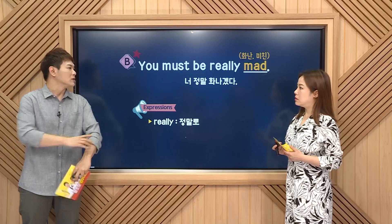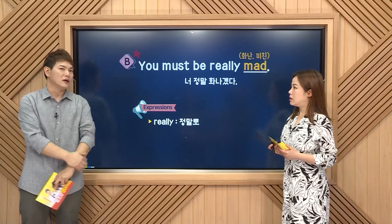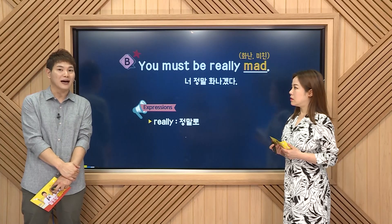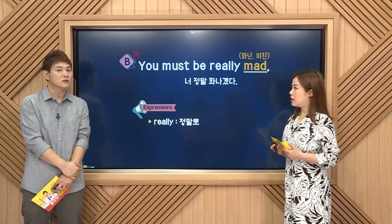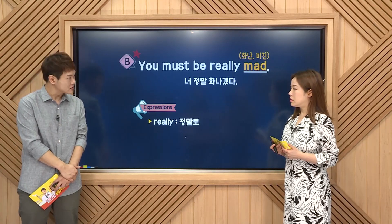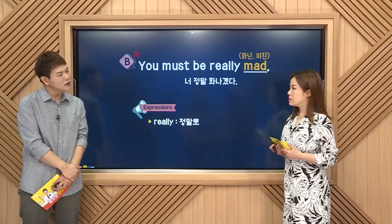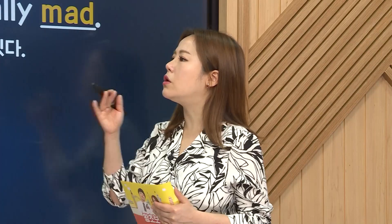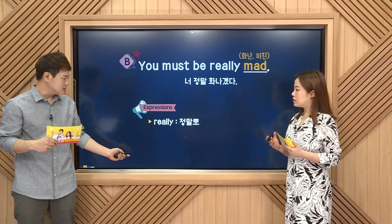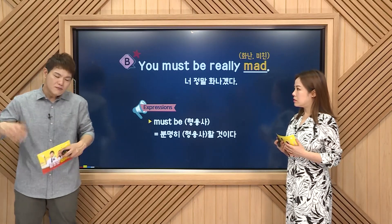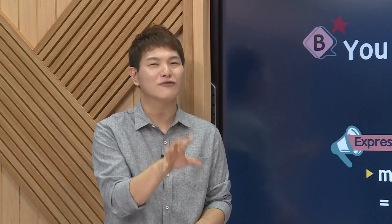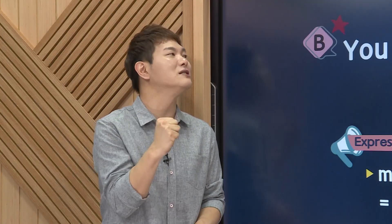여기 지금 너무 감동했던 게, must be라고 할 때, 원래 우리가 must라고 하는 건, 반드시 해야만 한다라고 하는 강한 의무였잖아요. 예를 들어, you must come back home. you must study hard. 이런 식으로. 하지만 여기서는 확실히 그렇겠다 — 강한 확신을 나타내요. must는 강한 의무도 나타내지만, you must be 형용사, 이런 식으로 쓰게 되면, 너 분명히 형용사 하겠구나, 이렇게 강한 확신을 나타내요.